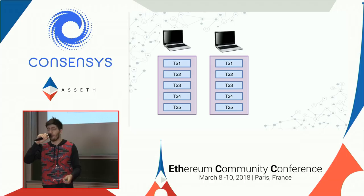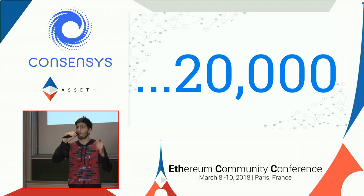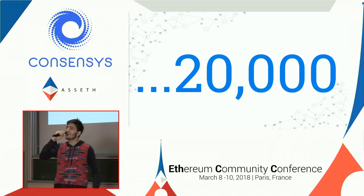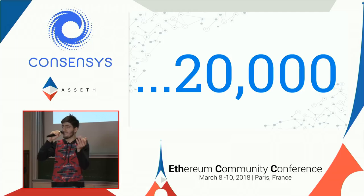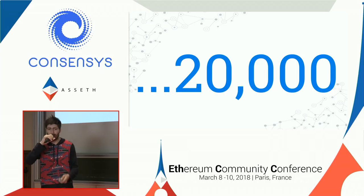But as soon as you get to around 20,000 computers trying to process basically the entire transaction loop of the Ethereum network, it gets pretty crazy. Now that people are actually excited about using blockchains and using Ethereum, the infrastructure has to catch up — and that's why there are so many emerging scaling solutions on the horizon.